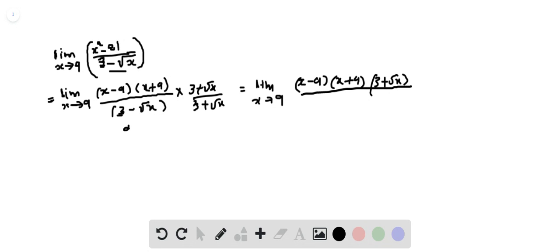This is a minus b and this is a plus b. So a minus b into a plus b equals a squared minus b squared. So here a is 3 and b is root x.